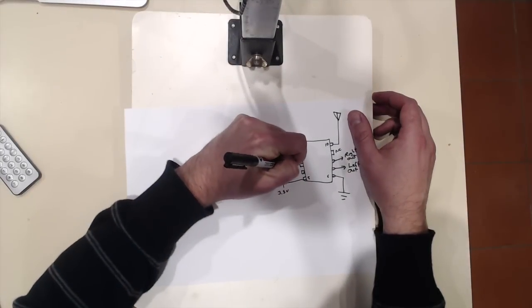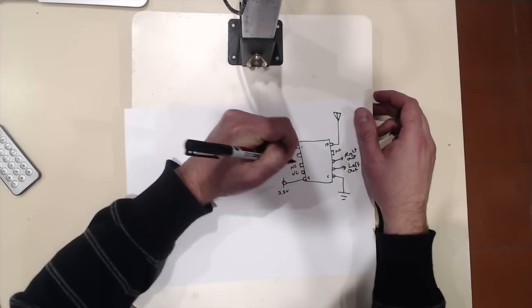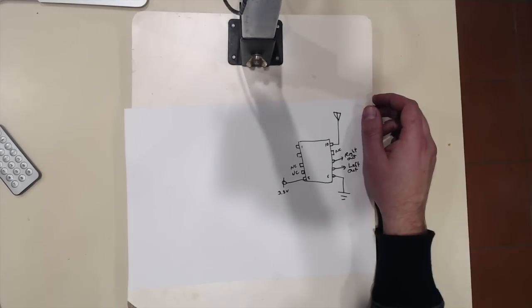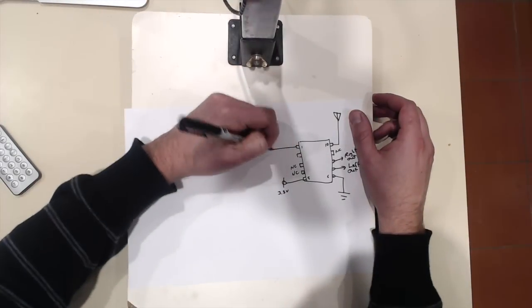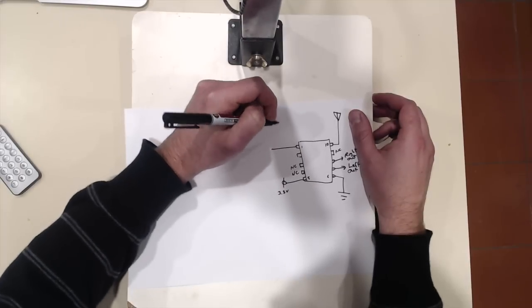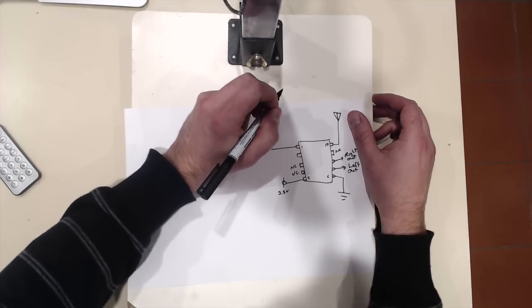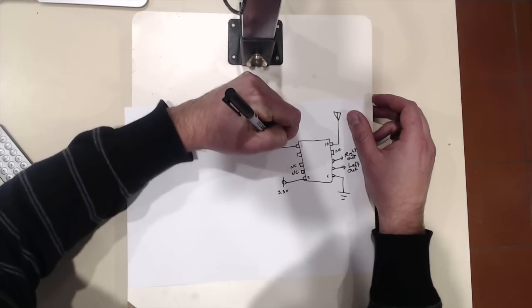Pins three and four are also not connected. So, that makes things easy. And, then, pin one is your two wire interface. And, it's the SDA connection.